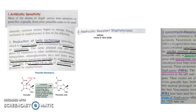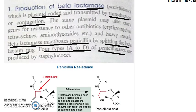In the previous video we saw how to treat Staphylococcus aureus infections: you give penicillin; if resistant, you give methicillin; if resistant to methicillin, you give vancomycin; if resistant to vancomycin, you can give linezolid. Now we have to learn how it becomes resistant.